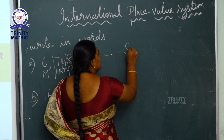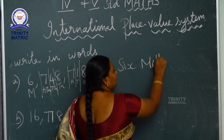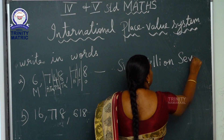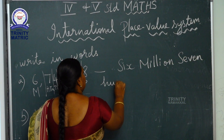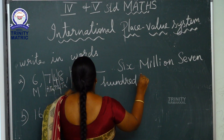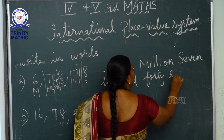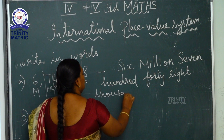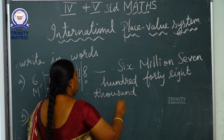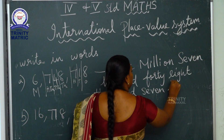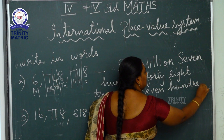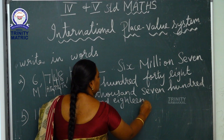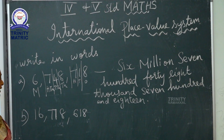So write 6,000,000 — three digits combined — then 748,000 — then 718. Without any spelling mistake you have to write the number name.